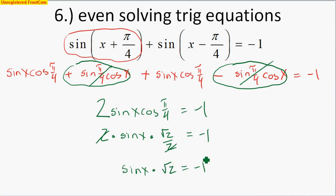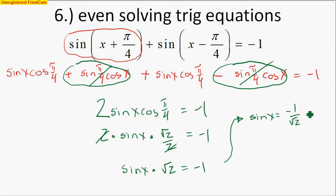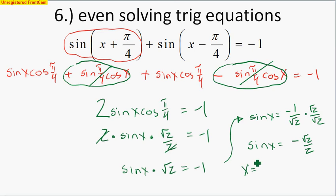Cosine of pi/4 is √2/2, so we have 2·sine(x)·(√2/2) = −1, and the 2s cancel to give sine(x)·√2 = −1. Dividing both sides by √2 gives sine(x) = −1/√2. Rationalizing: sine(x) = −√2/2. Looking at the unit circle, this occurs at 5pi/4 and 7pi/4 radians. Those are the two answers on the interval 0 to 2pi.